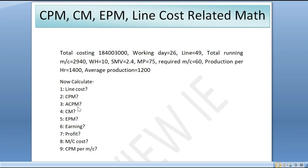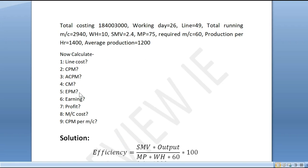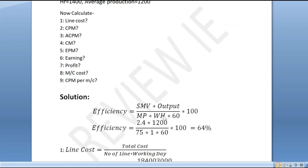The line cost, CPM, ACPM, CM, EPM will be calculated. The efficiency is equal to... we use a contract at 64%. We put the contract at 64% for this optimization.